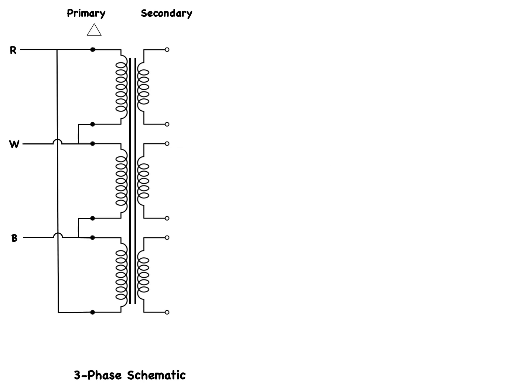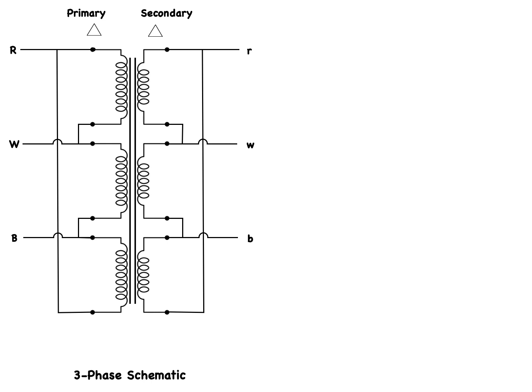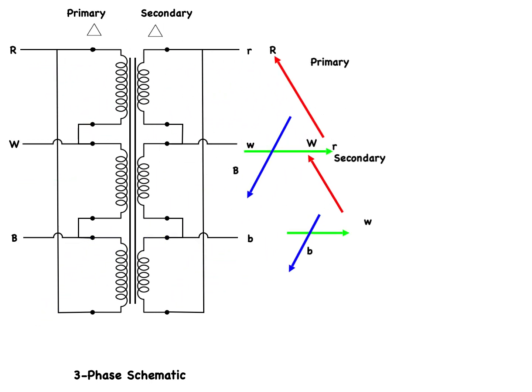Let's return to the delta-connected primary and connect the secondary in delta as well. The top of each winding is brought out to be the red, white, and blue terminal of the secondary side. Remember that the primary side is connected to the phase-to-phase voltages of the system. Since the primary winding is magnetically linked to the secondary winding, the secondary voltage in that winding will be in phase with the primary winding voltage. The same is true for each of the transformer windings. When we plot the vectors of the primary and secondary sides, they look like this.